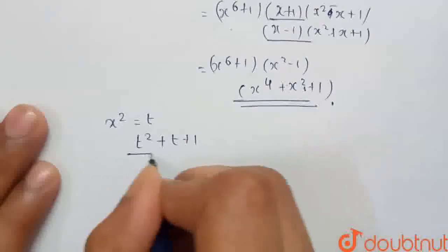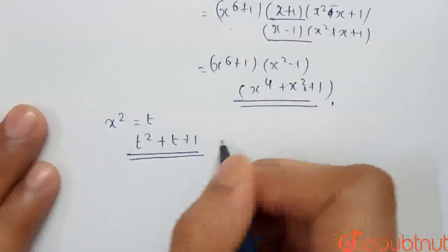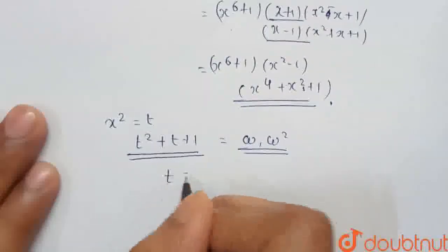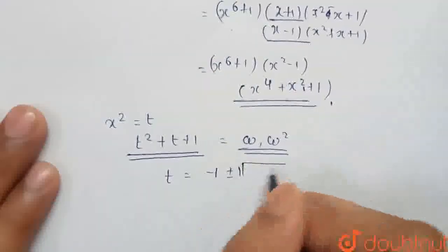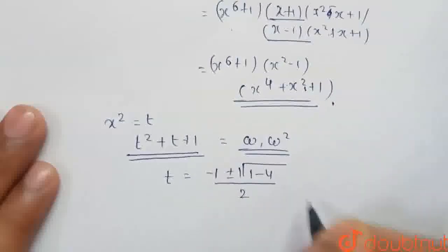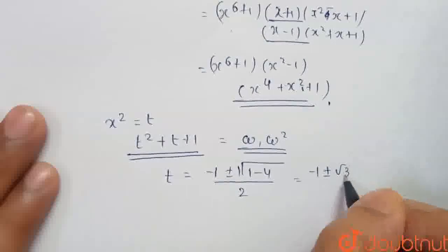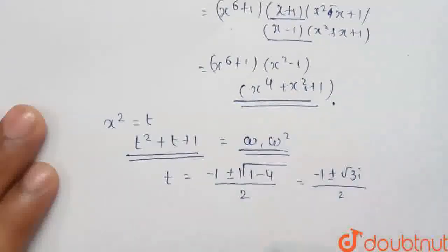And we know this is a common equation whose roots will be omega and omega square. We can also solve it as (-b ± √(b^2 - 4ac))/2a. It will be (-1 ± √3i)/2. So this will be omega and omega square.